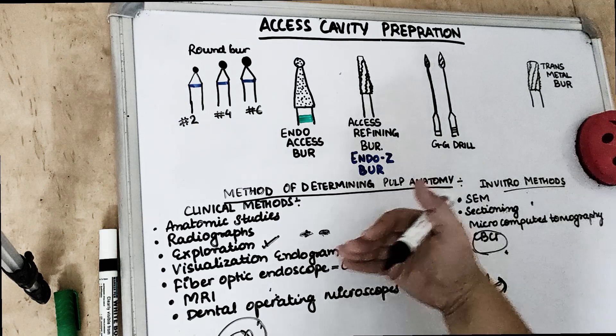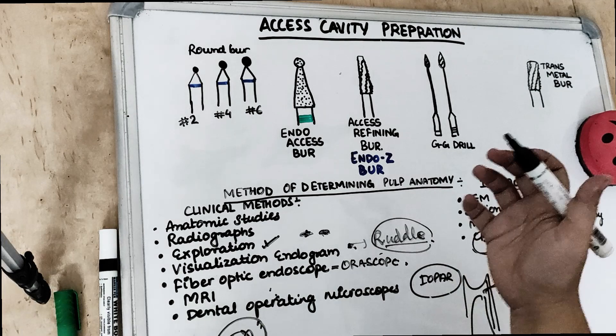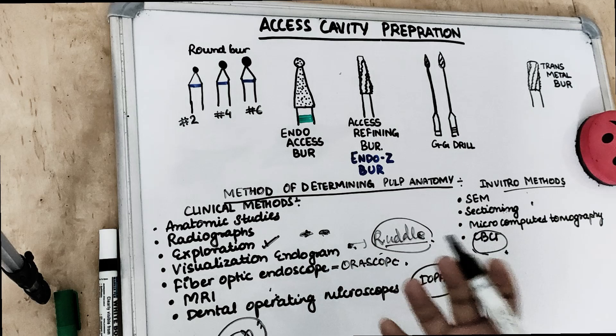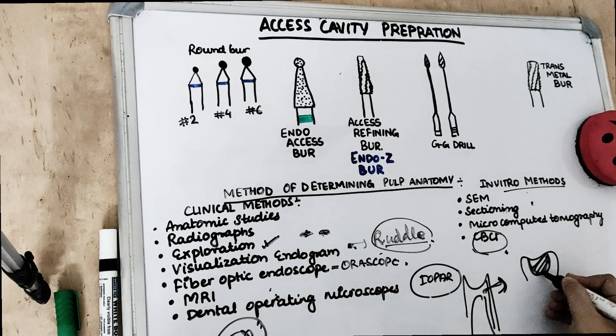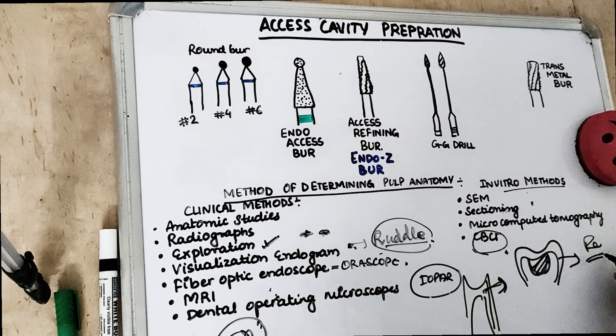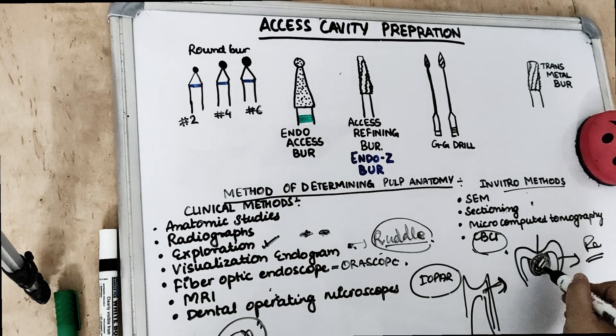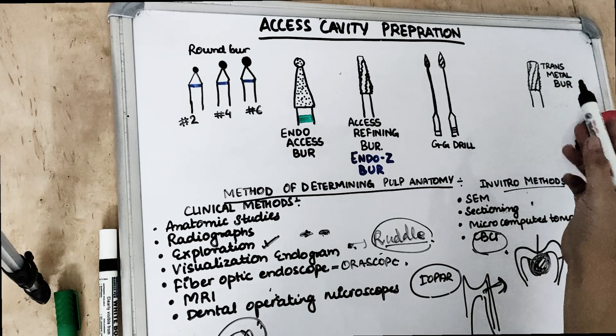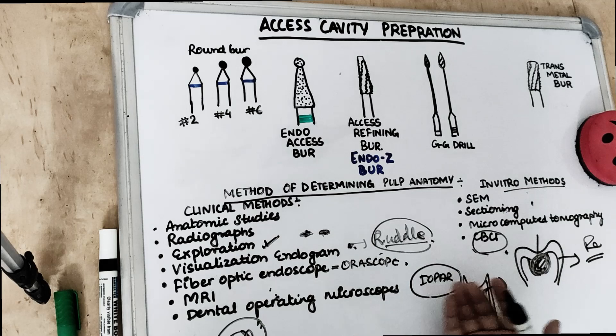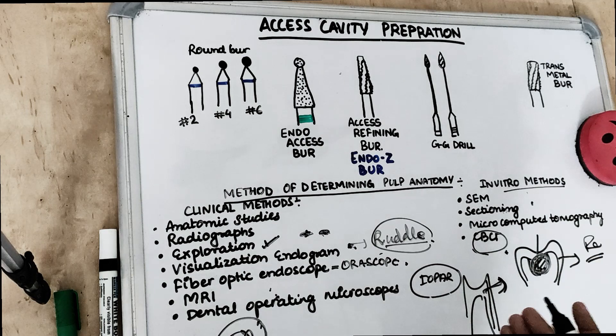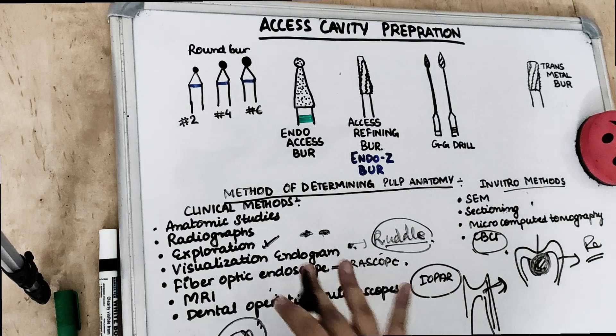For access cavity preparation, we need to access the root canal. If a tooth is heavily restored or has a crown — for example in a re-root canal treatment — we must first remove the restoration or cut the crown using the transmetal bur. This is a tungsten carbide bur used to cut crowns, amalgam, or metal restorations.